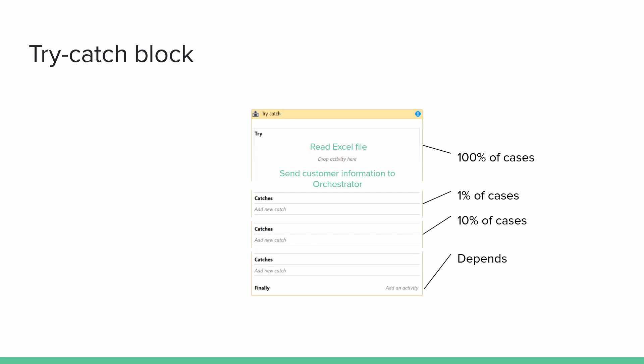How do you fix exceptions? There are multiple ways. There is the retry block, but the main point — and actually all of the activities — use the try-catch block. The try-catch block works like this: what's inside the try is executed 100%. You can have multiple catches. Let's say the first catch covers 100% of the cases, the second catch and so on. And finally, it really depends on what you have in the try and the catch.